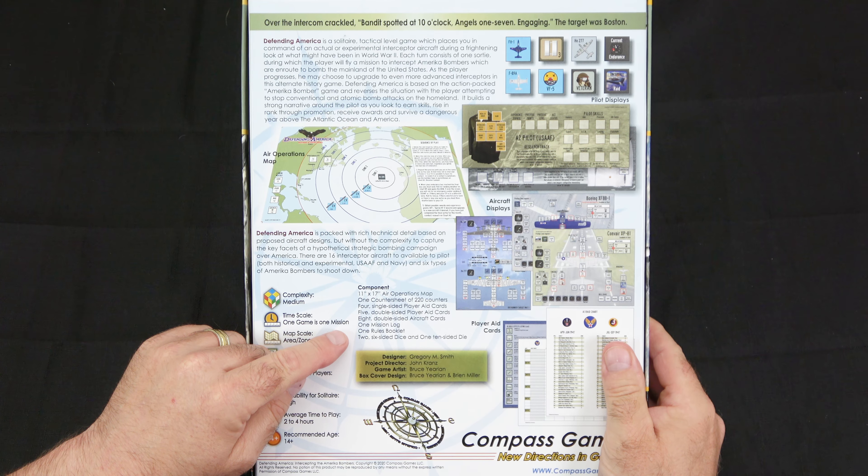and then game setup starts on page six. You have your base assignment, your start date, you prepare your sortie log sheet, aircraft display mat setup, ammunition, your basing, how to keep track of all that, changing bases, target zones, changing your aircraft, flight school, and then how to win the game is explained to you.